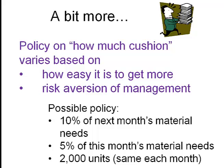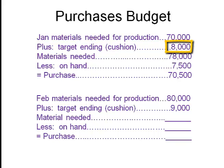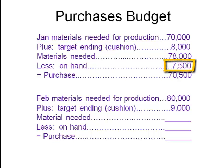Let's do the computation. Here's an example of a purchase budget for January. We need 70,000 raw material units — pounds, feet, wheels, circuit boards, whatever it is. Here's the cushion management wants: 8,000. So they need 78,000 to cover what they're going to need for production, plus a little extra because production is a guess and it could change. But they're not going to buy the whole 78,000 because they already have 7,500 on hand. So they need to purchase 70,500 units of whatever the materials are.